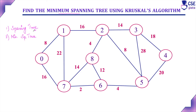A spanning tree is a connected acyclic subgraph — it should include all the vertices of the given graph. All the vertices are connected but it should not form a cycle. A minimum spanning tree is obtained by finding the spanning tree and adding its edge costs to get the total cost, which is the minimum spanning tree cost.